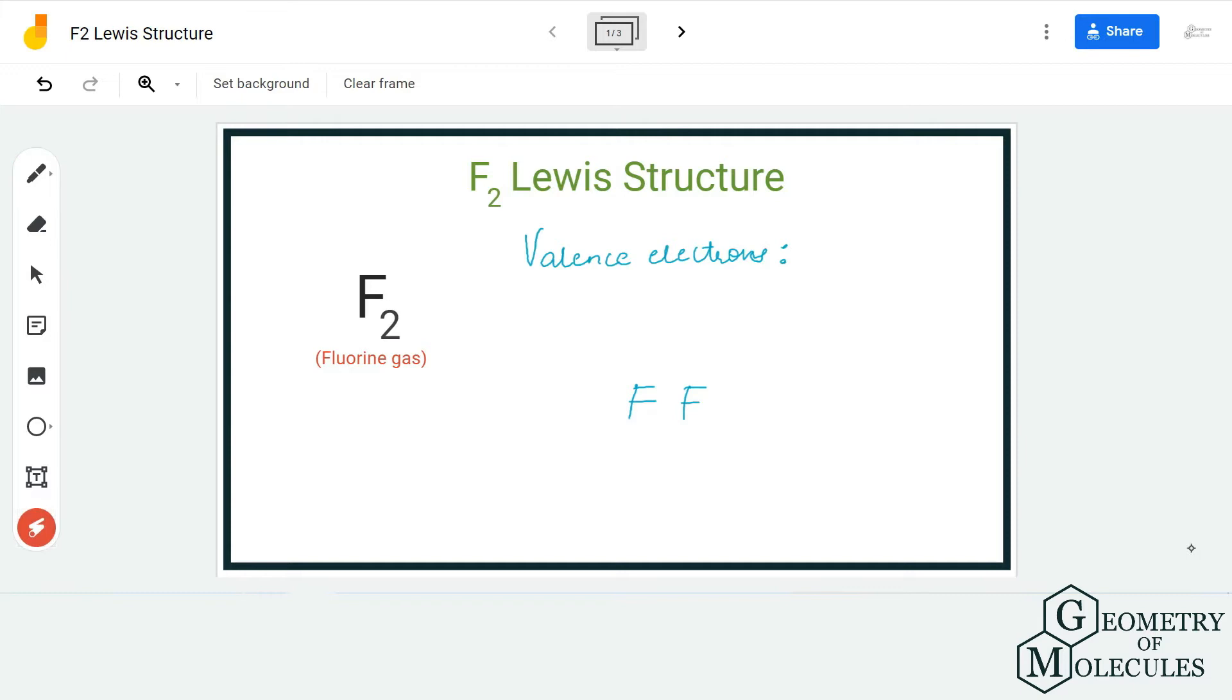Hi guys, welcome back to our channel. In today's video we are going to help you determine the Lewis structure for F2 molecule. It is going to be really easy because this is a diatomic molecule made up of two similar atoms.